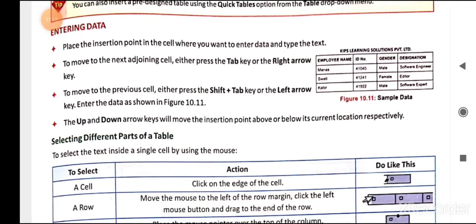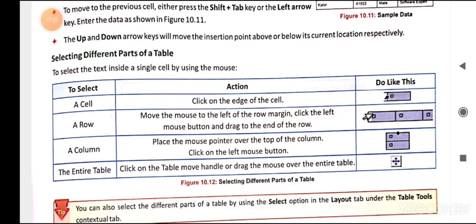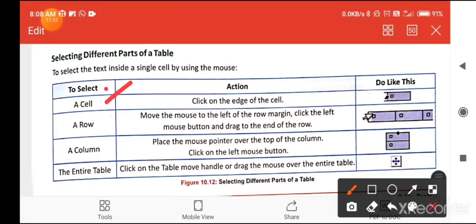The next topic is selecting different parts of a table. To select the text inside a single cell using the mouse, click on the edge of the cell border and the cell will be selected. To select a row, move the mouse to the left of the row margin, click the left mouse button, and drag to the end of the row to select the entire row.